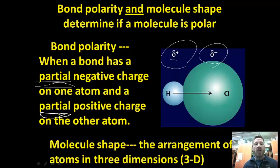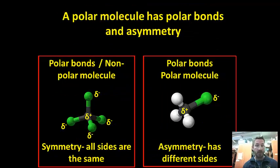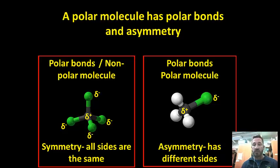The molecular shape is the arrangement of the atoms in 3D, and that's something we need to look at. For molecular polarity, we need to look and see if there's asymmetry in the particle.